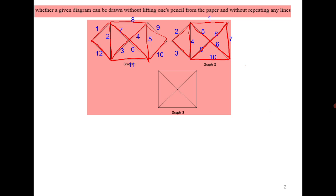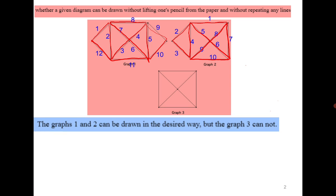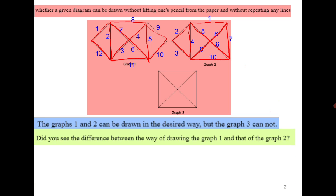For the first two graphs it is possible to trace the whole graph without lifting your pencil and without repeating any edge. The vertices got repeated. At the same time you will observe that in the first one it starts and ends at the same vertex, while the second one starts with one vertex and ends at another vertex.